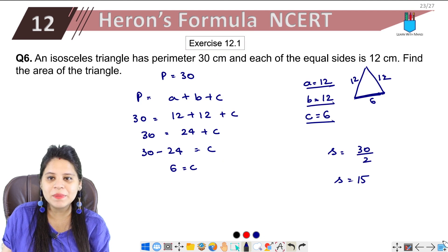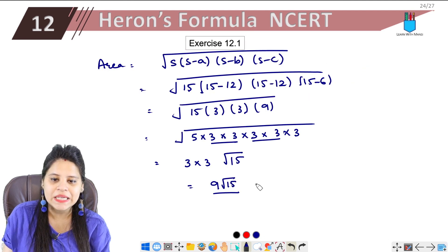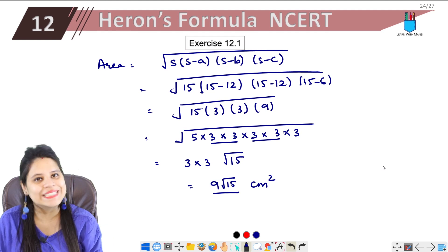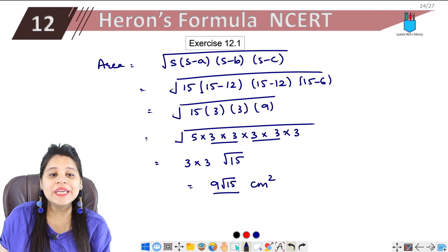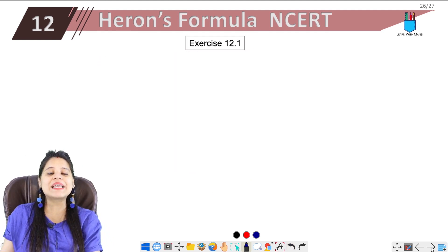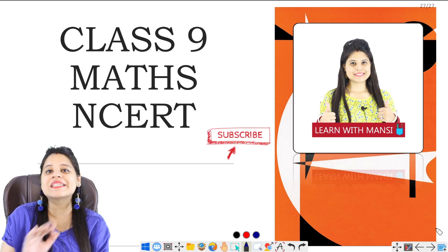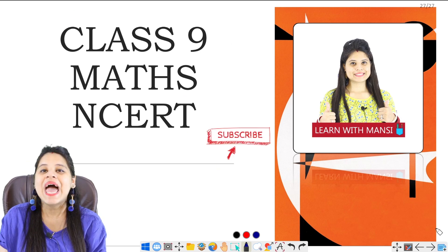So area is 9 root 15. There was centimeter, so this will be centimeter square. This was our last question of exercise 12.1. With this our exercise is finished.